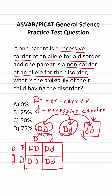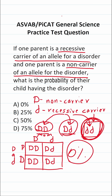We do not see the genotype little d, little d anywhere, which means that this mom and dad would have a 0% chance of producing an offspring that has the disorder. So the answer is A.